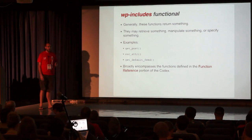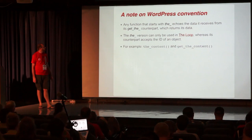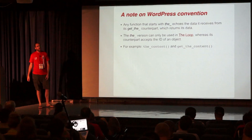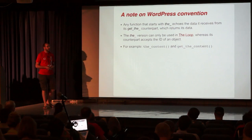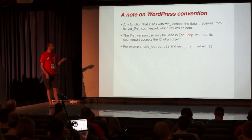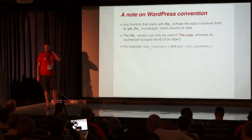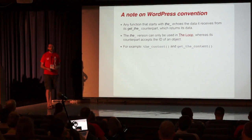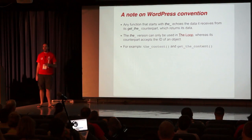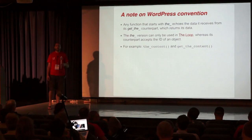The functions that start with 'the_' echo their content for you. These can only be used inside of the loop — so inside of 'if have_posts, while have_posts' — that's where you have to use the_title, the_content, the_permalink, and so on. If you aren't in that context and you're trying to use those functions, you are going to get potentially weird results. The data that you're getting back is not what you anticipated, because those functions only get set up when you are inside of that loop.